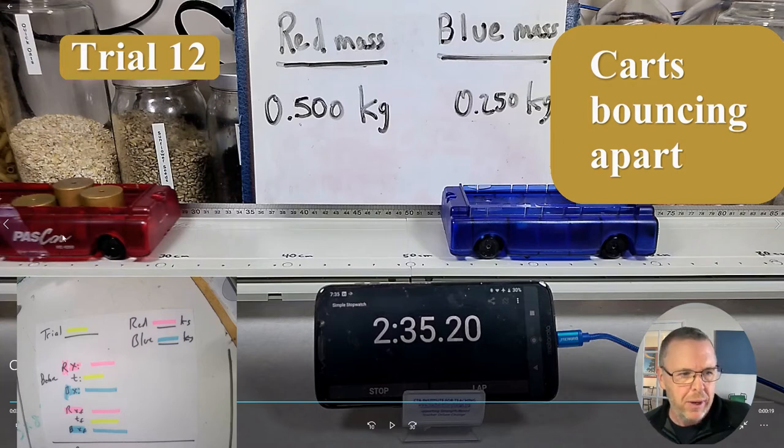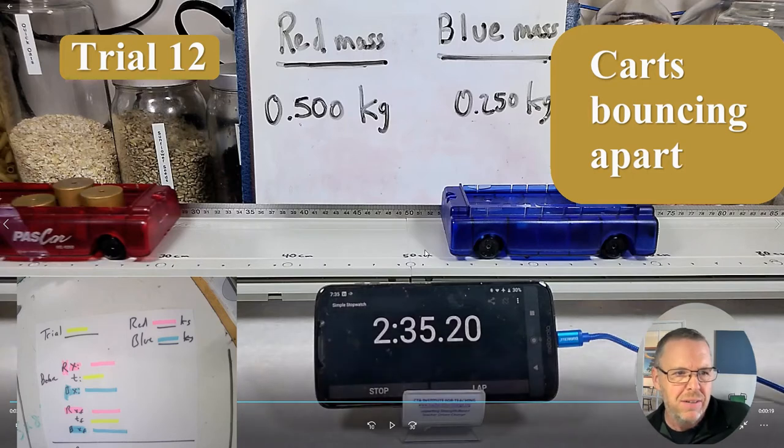So what we want to know we want to know the velocity of the cars before the collision and after the collision. So in order to figure out the velocity we know we need to figure out the displacement and divide that by the time.